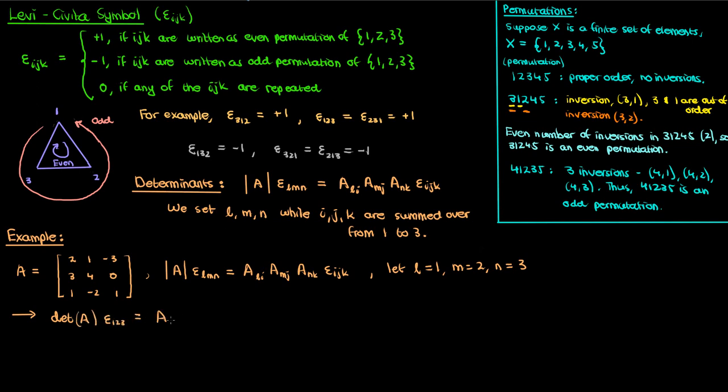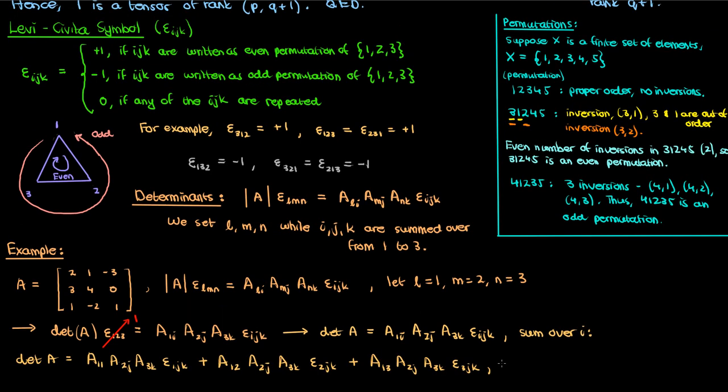If we do that, then we'll have epsilon 1, 2, 3 on the left-hand side multiplying the determinant of A, and then the following on the right-hand side. But epsilon 1, 2, 3 is just 1 by the definition of the Levi-Civita symbol, so this is what we're left with. Now let's evaluate the right-hand side by summing over from 1 to 3, starting with the index i.